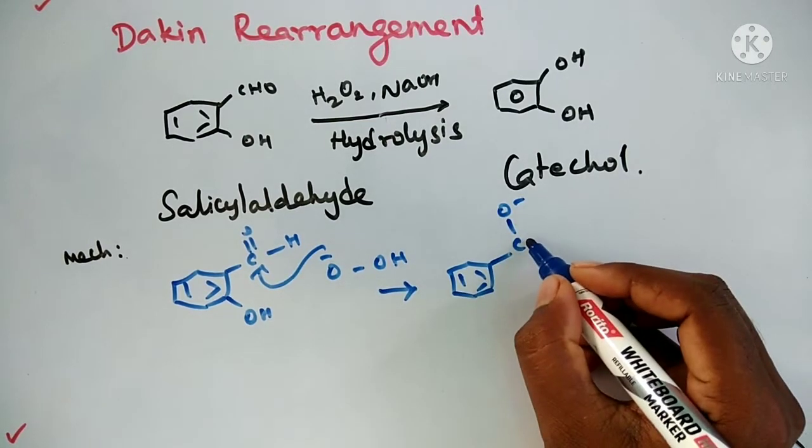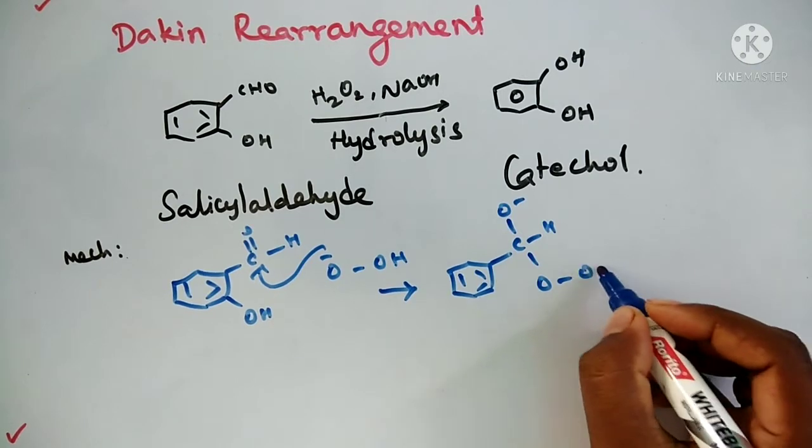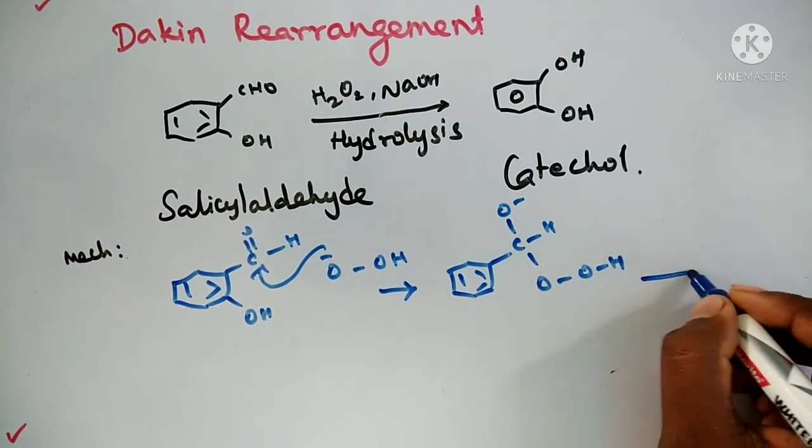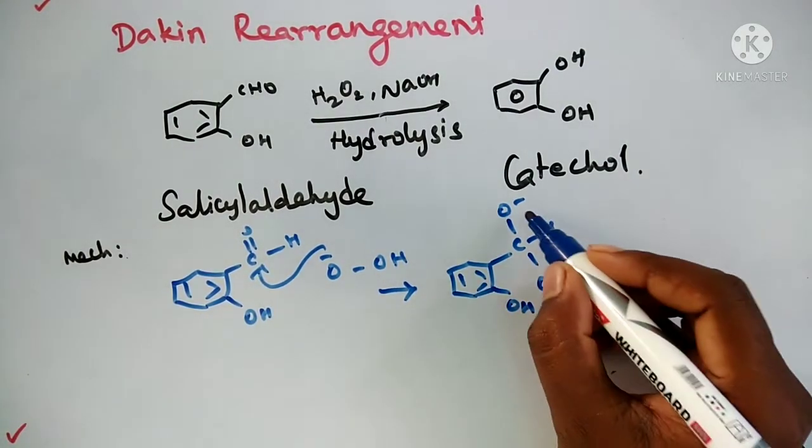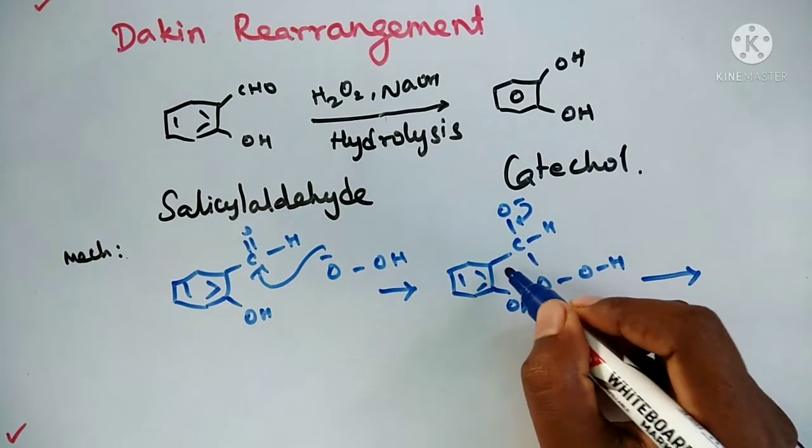Bond H, bond O, bond OH. The next step is the migration of this bond to here, then automatically this bond comes here, the elimination of OH.